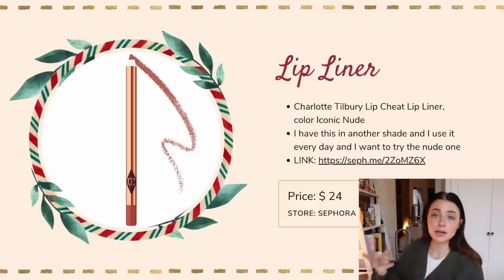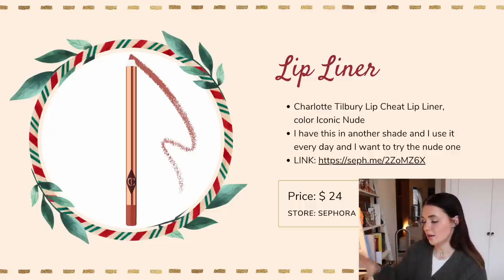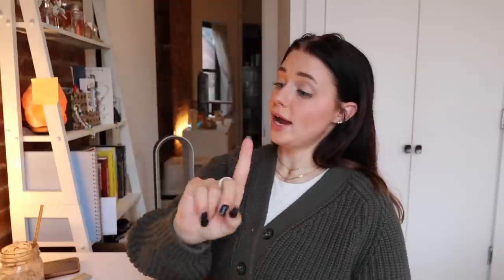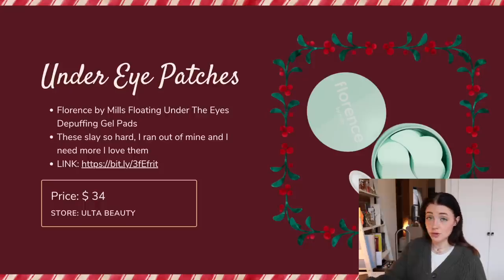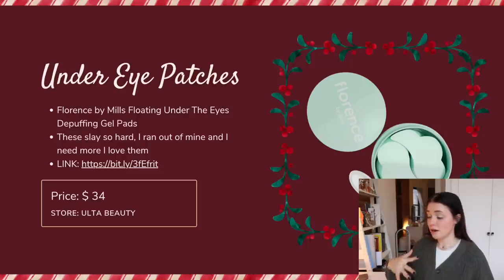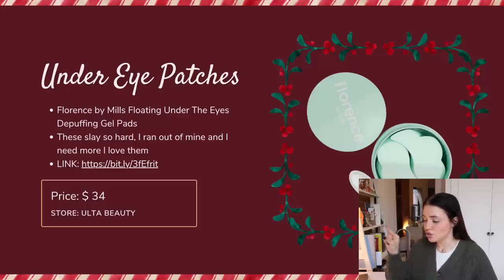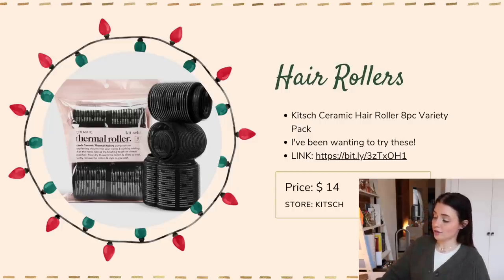Next I have a lip liner. I'm obsessed with my Charlotte Tilbury Pillow Talk liner, but I kind of want a browner-toned one — the Pillow Talk is very rosy, which is beautiful, but I want to try another shade. Next up: these under eye gel pads from Florence by Mills — extremely grateful I received these in PR. I used them all because I literally put them on every time I do makeup or when I'm extra puffy in the morning. They're under eye de-puffing hydrating gel pads, basically little under eye masks. I love these. I ran out and I need more.